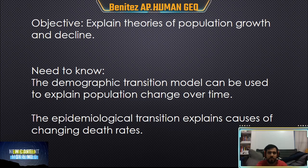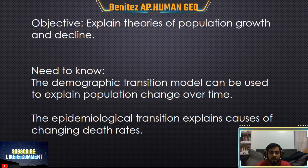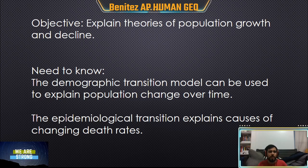Our objectives: we're going to explain theories of population growth and decline — why do populations grow, why do they decline. There are two models that geographers use. The first is the Demographic Transition Model, which tracks population change. The second is the Epidemiological Transition Model, which explains the causes of changing death rates — specifically why fewer people are dying now compared to the past when there was less medicine and fewer hospitals.